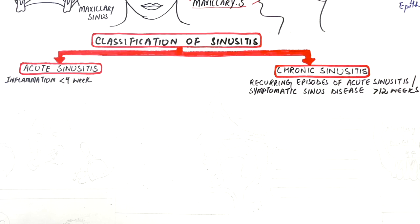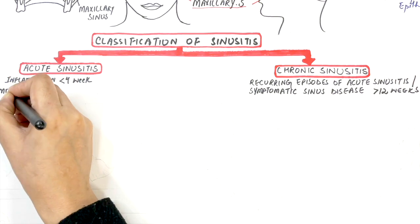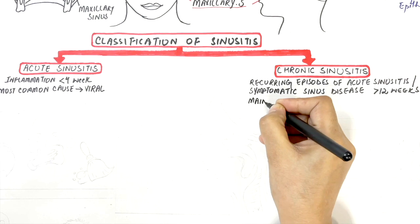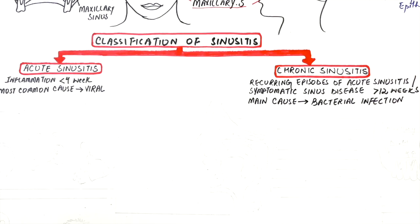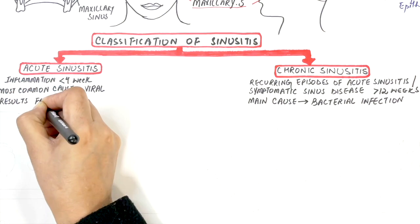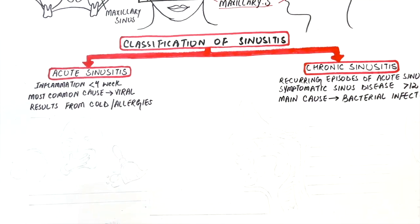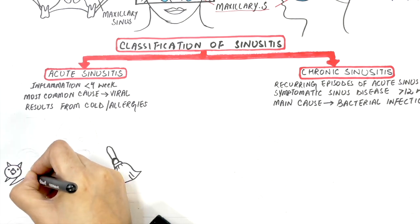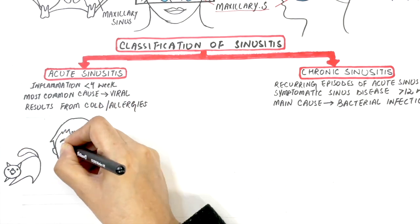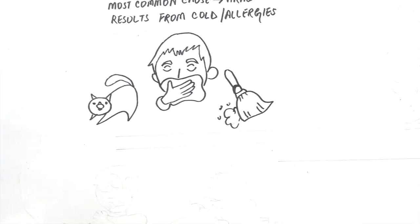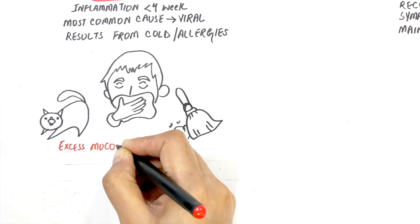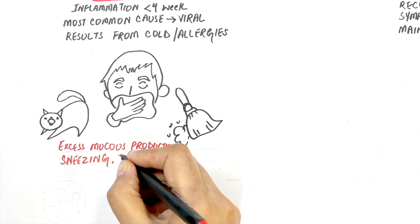The most common cause of acute sinusitis is viral in origin. Acute sinusitis usually occurs from a cold or allergies. Allergens such as pollen or pet dander may trigger an inflammatory response of the mucosa of the nose and sinuses, resulting in excess mucus production, sneezing and itching with nasal congestion.